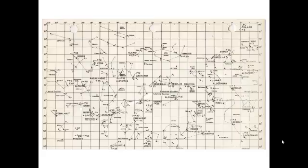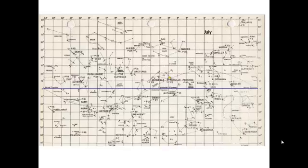There is one star whose position does change throughout the year — and that star is, of course, the Sun. If we add the Sun to this star chart, there it is. We can see May, June, July, August, September. So depending on what time of year it is, the Sun is in a different place: it has a different right ascension and a different declination. The path of the Sun is called the ecliptic.